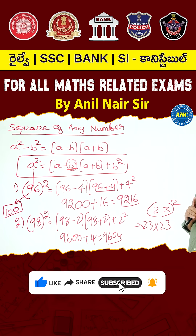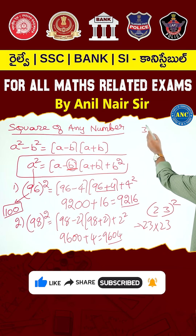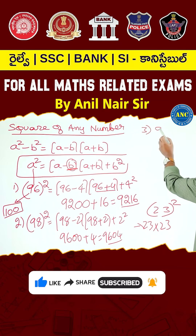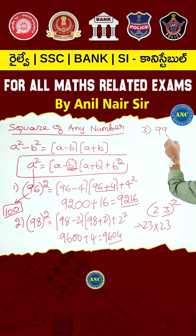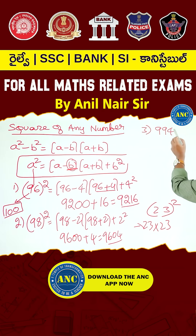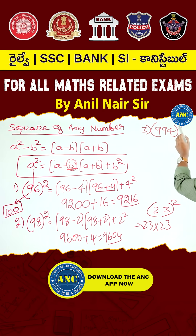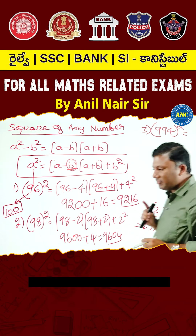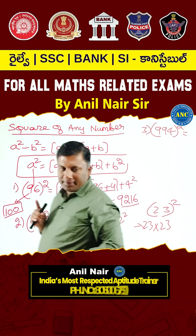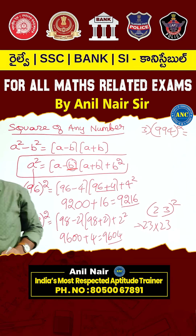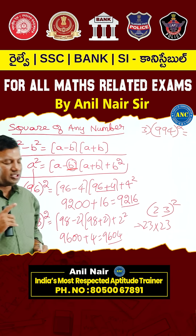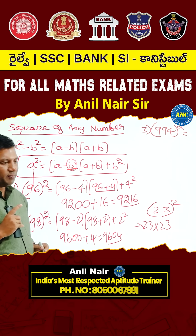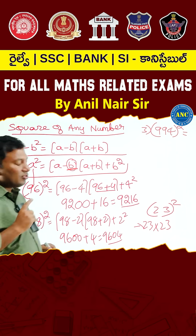You asked me whether this method is valid for a three-digit number. Let's co-work through it together. Try to give this answer: what is 994 squared? What is the first step? 994 is nearer to which number? 1000.